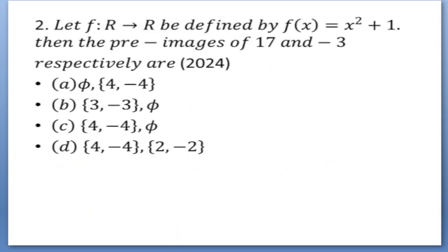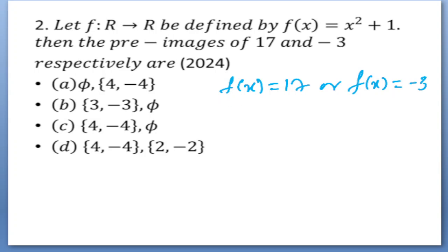The next question: let f from ℝ to ℝ be defined by f(x) equals x² plus 1. We have to find the pre-images of 17 and minus 3 respectively. Here 17 and minus 3 are the images, meaning the values of the function, and we need to find the pre-images — the values of x. So we set up two equations: f(x) equals 17, and f(x) equals minus 3.